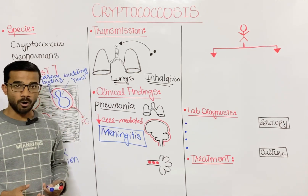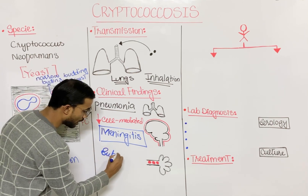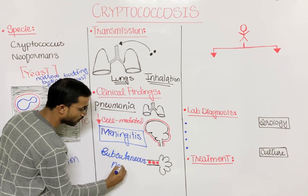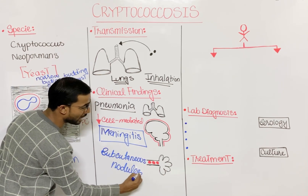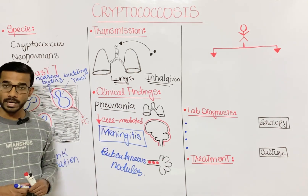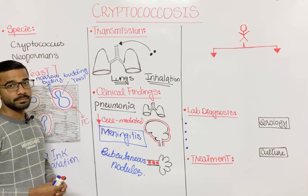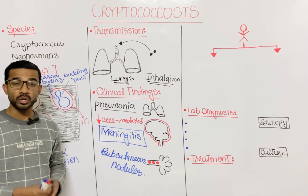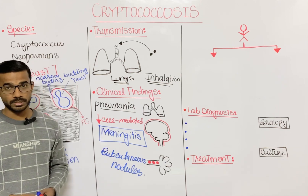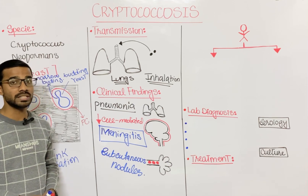In the disseminated form you can also see subcutaneous nodules. So there are three main clinical findings: first, pneumonia (which can also be asymptomatic); second, meningitis in patients with low cell-mediated immunity, especially AIDS patients; and third, subcutaneous nodules in the disseminated form.